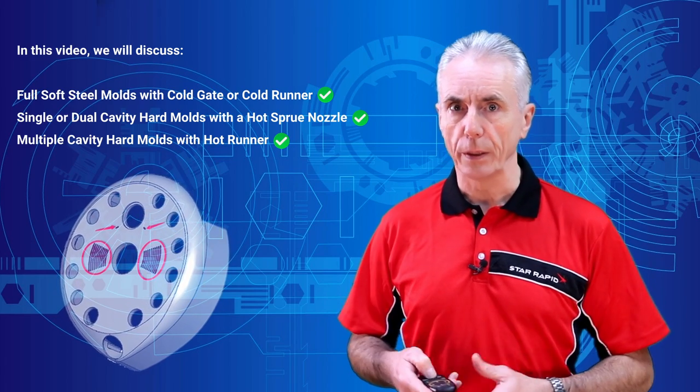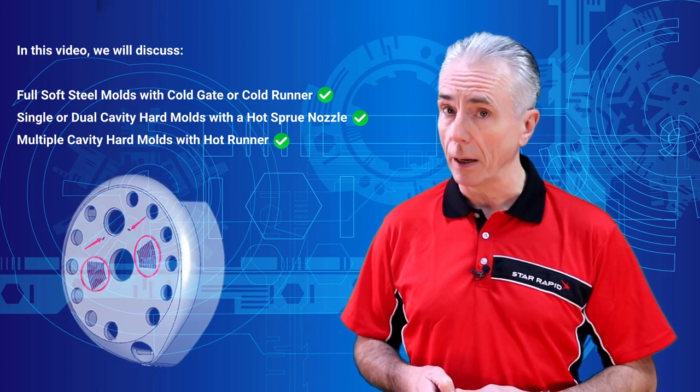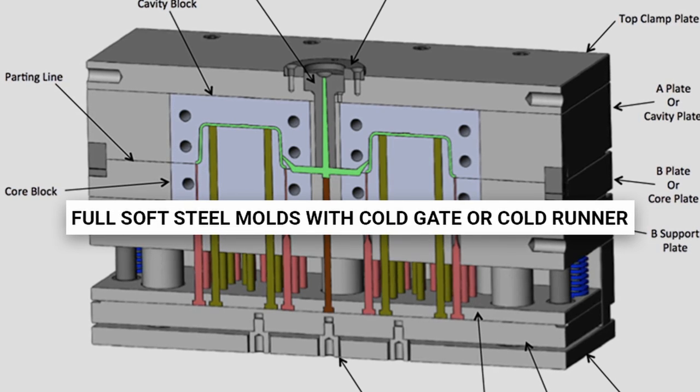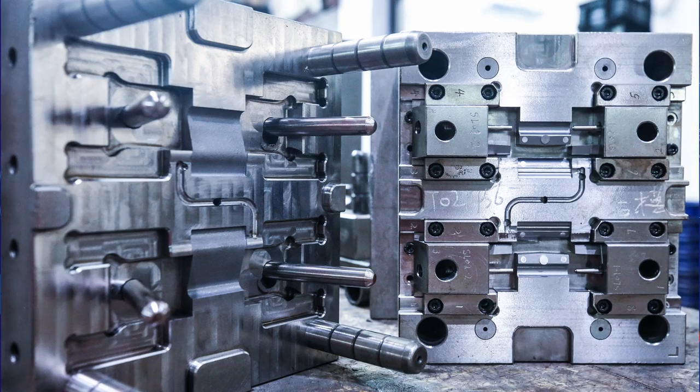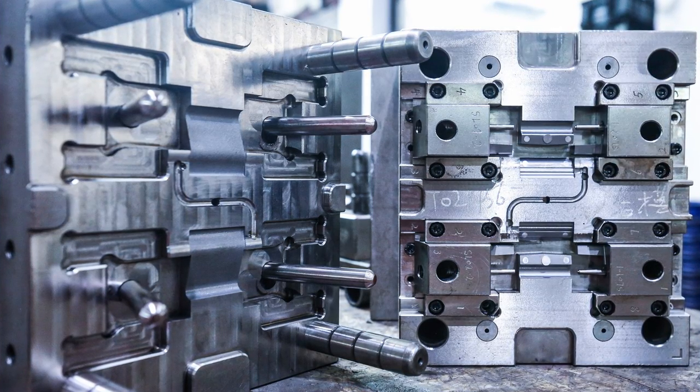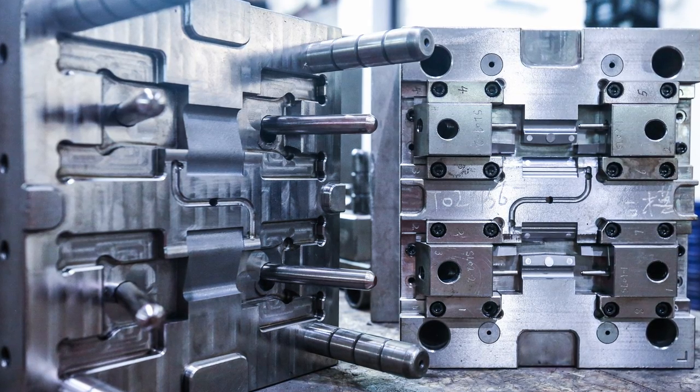Today we'll dive into true production tooling used for making millions of plastic injection molded parts. Full soft steel molds with cold gate or cold runner. This is the type of mold that we employ here at StarRapid now. From the outside they are mostly indistinguishable from a fully hardened production mold tool.